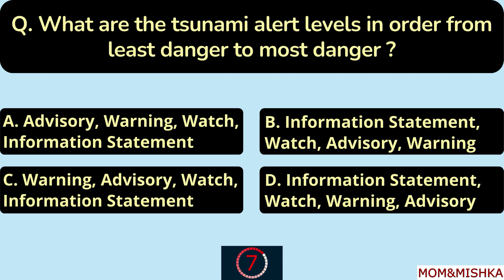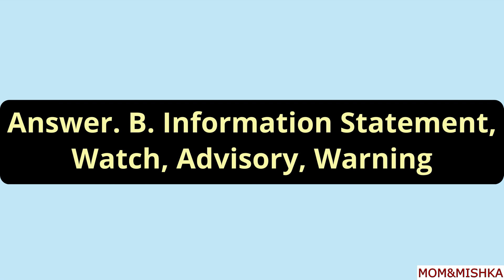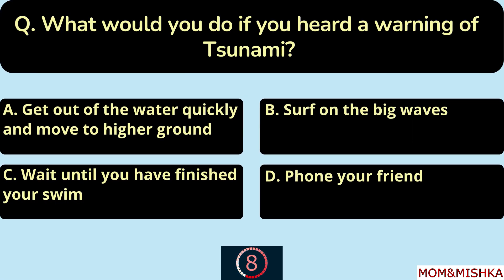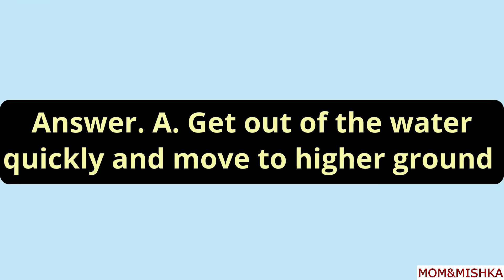The tsunami alert levels in order from least danger to most danger are — option B: information statement, watch, advisory, warning. If you heard a warning of a tsunami, the answer is option A: get out of the water quickly and move to higher ground.